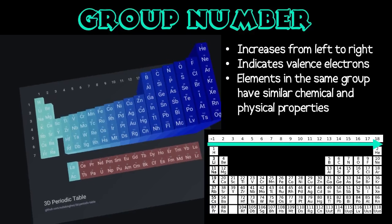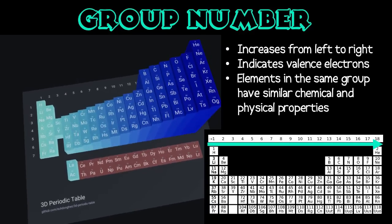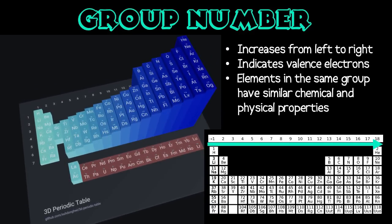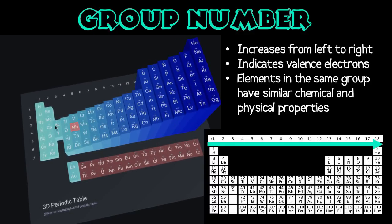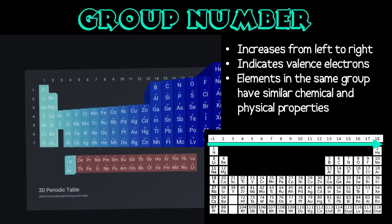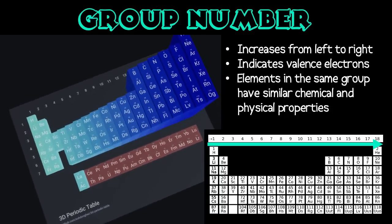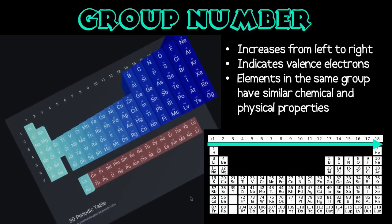First, here we have the group number. The group number refers to our vertical columns and increases as we go from left to right across our periodic table. The group number represents our valence electrons — the electrons in the outer shell — and the space that atoms have for valence electrons when reacting chemically. This similarity in characteristics corresponds with similar chemical and physical properties in each group, so all elements in the same group will exhibit similar chemical and physical properties.